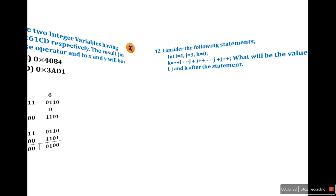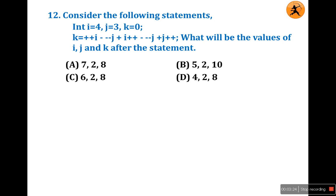Question number 12: Consider the following C code. We have to calculate the resultant values of i, j, and k. int i = 4, j = 3, k = 0. We need to evaluate the expression for k. In this expression, pre-order and post-order increments are used.